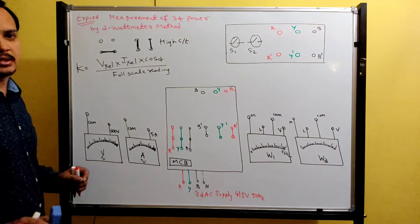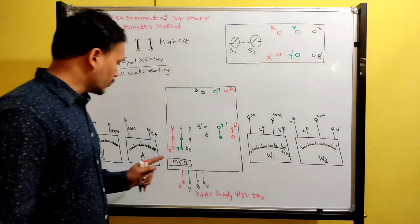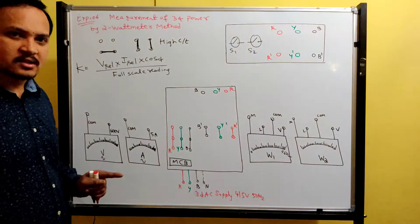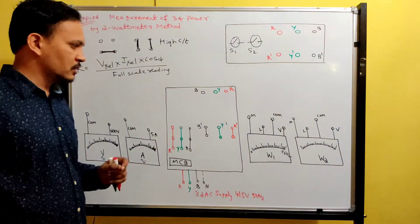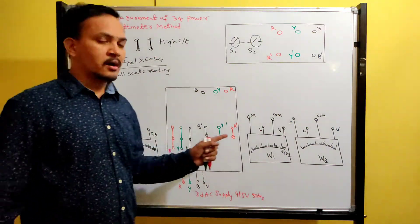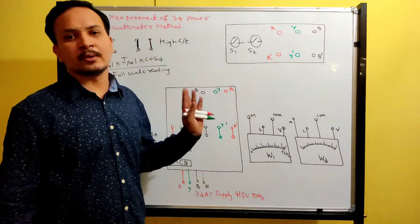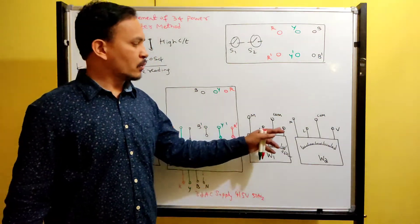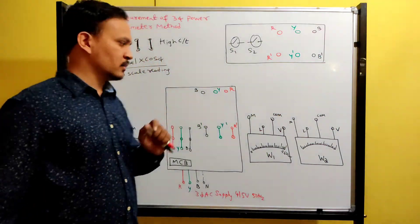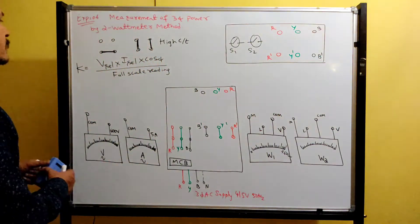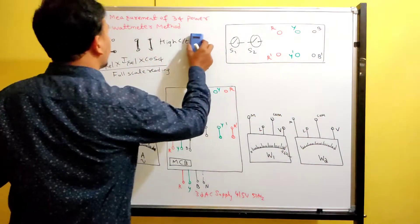What I suggest: when you do the connection, select 10 ampere range and 300 volt — that's it. Now we can do the connections.